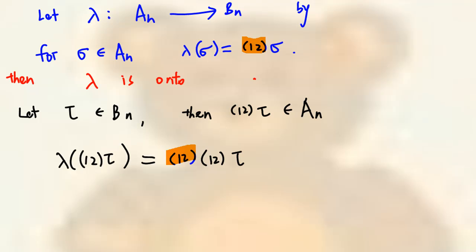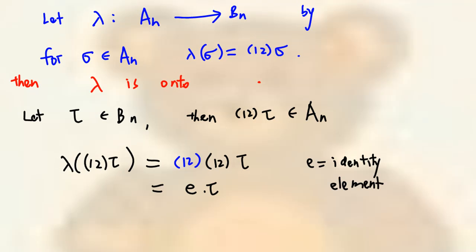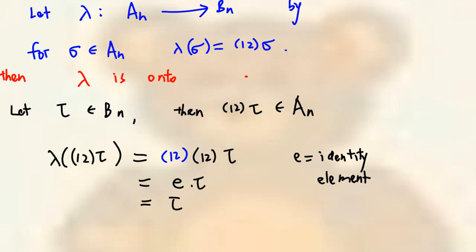But then, (1 2) times (1 2) is the identity element. And the identity element times tau is equal to tau. This means that the mapping lambda is onto.